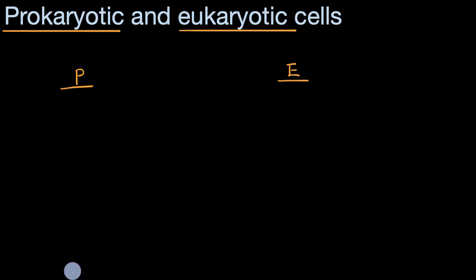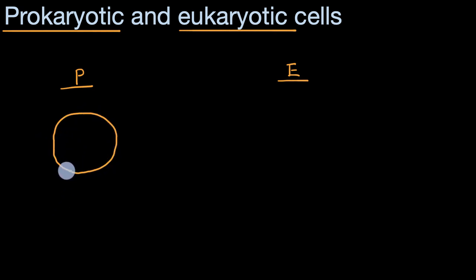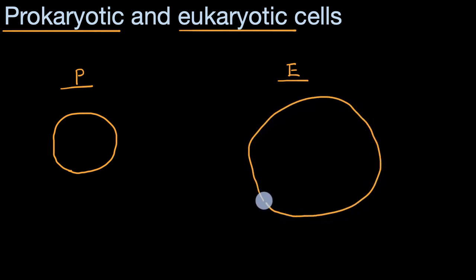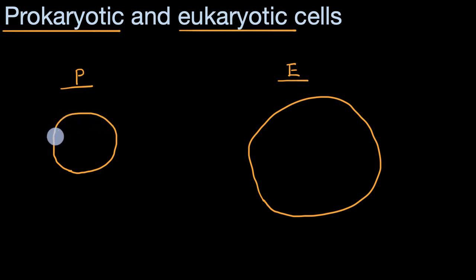Let's start with the similarities. They both have a plasma membrane. This is a plasma membrane for the prokaryotic cell, and this is for the eukaryotic cell. This is an outer layer that separates the cell's interior from its surrounding environment. In some ways, it defines the boundaries of the cell.